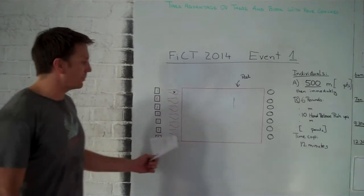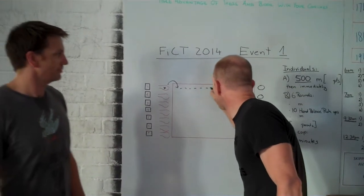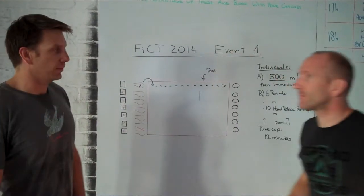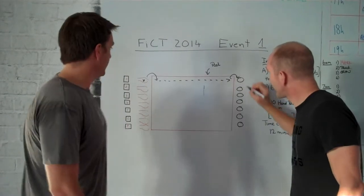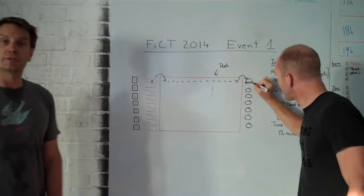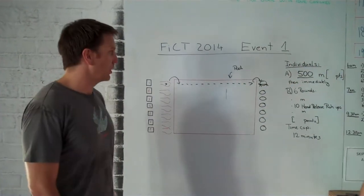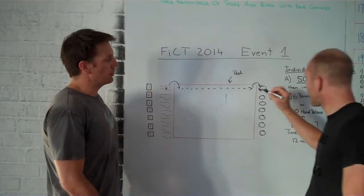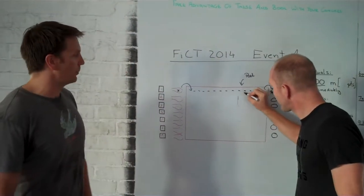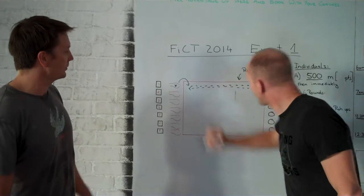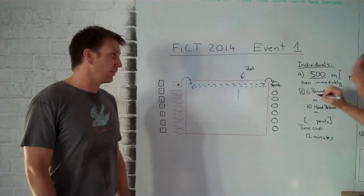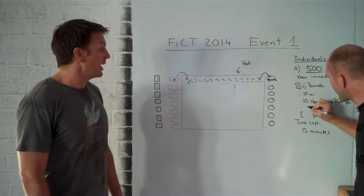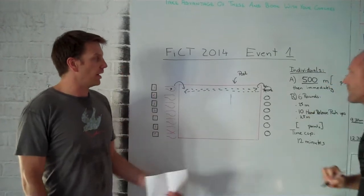Immediately after that you'll jump in the pool. Swim across the pool, jump out, turn around and face your row and do ten hand release push-ups. Once you've done your hand release push-ups, you get back in the pool, swim across the pool, make contact with the other side and that will be one round.